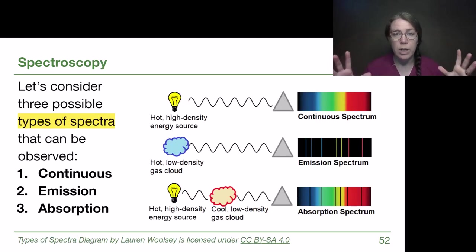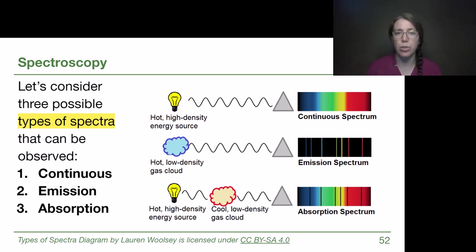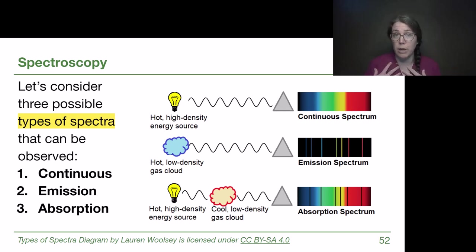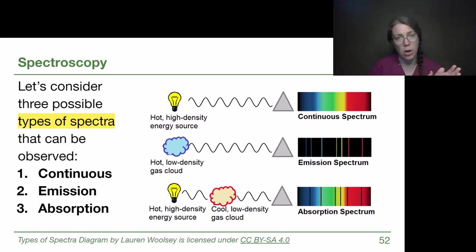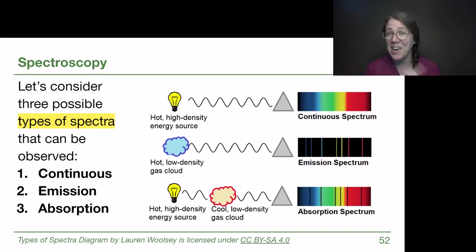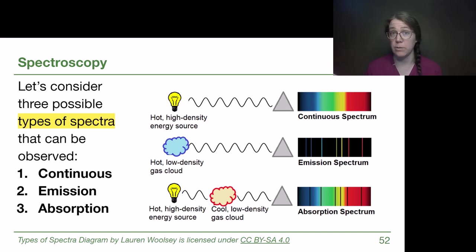We now have enough understanding of what's happening at the atomic level to identify the three types of spectra. If we have just a high-density hot source — like a human being, the center of the earth, or an incandescent light bulb — it will create a smooth curve of wavelengths where the peak tells us the temperature. When we display the data as a spectrum, we see all colors present: that's a continuous spectrum.